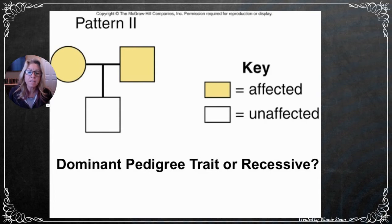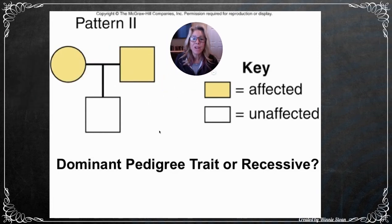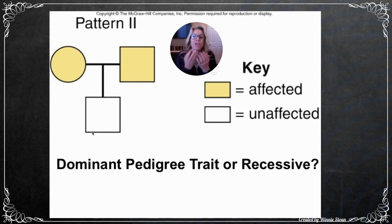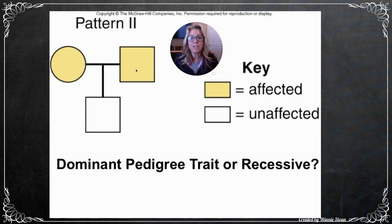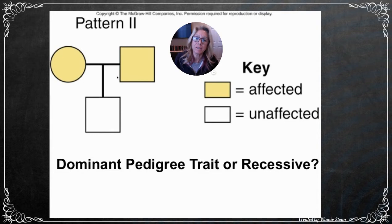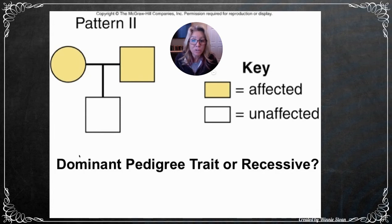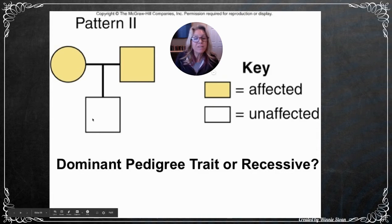Looking at another pedigree: is this trait dominant or recessive? Two affected individuals had a child that does not have the trait. We know that two blue-eyed parents would only produce blue-eyed children, so if a child escaped the disease, these parents must have been carrying a good copy. This means they're expressing a dominant trait while carrying a recessive allele — heterozygous big A, little a. As long as they have the big A, they express the dominant trait.